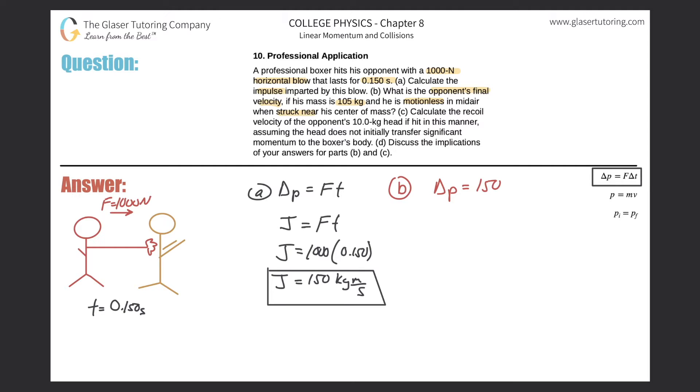Remember the change in momentum value will simply be the final momentum minus the initial momentum equals 150. That's the change, right? Final minus initial.